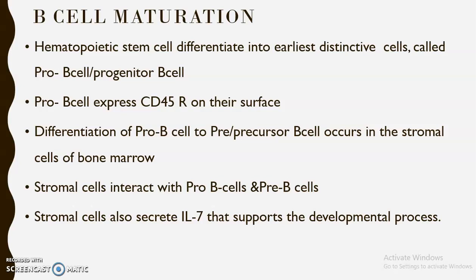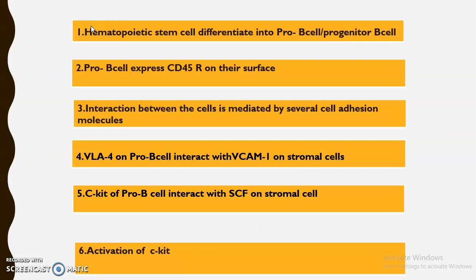This differentiation requires the microenvironment provided by the stromal cells of bone marrow. The pro B cells and pre B cells must interact with the stromal cells of bone marrow for formation of mature B cells. The stromal cells also secrete interleukin-7, a cytokine required for the development and maturation of B cells.